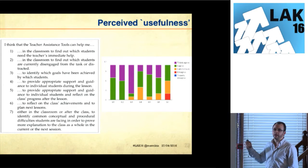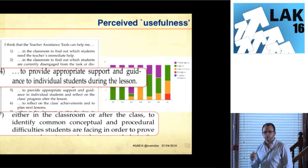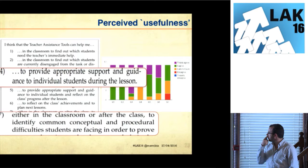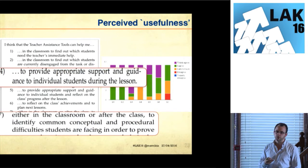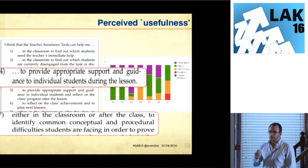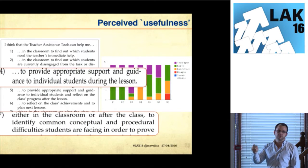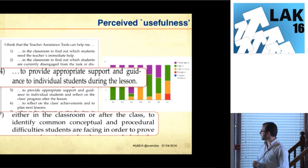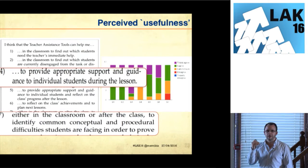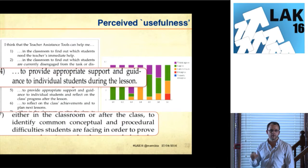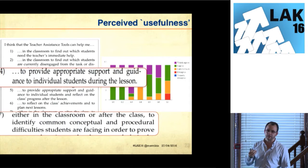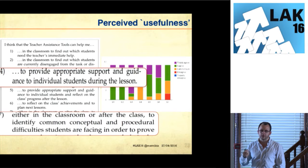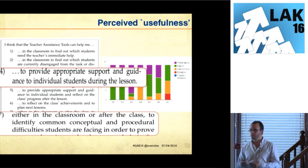Another metric is what we term 'perceived usefulness' — whether teachers agree with specific statements about how the tools are helping them. I'll focus on two that seem a little problematic. One is providing appropriate support and guidance to individual students during the lesson: the tools were able to show a specific student that maybe needs help, but teachers would also welcome ways the tool could help them directly rather than requiring them to engage in the whole interaction and figure out how to help. Another is helping identify common procedural and conceptual inconsistencies and difficulties students are facing — we were perhaps setting the bar too high, as it requires a lengthy reflection stage from the teacher.